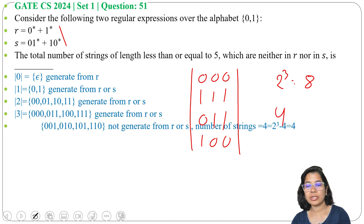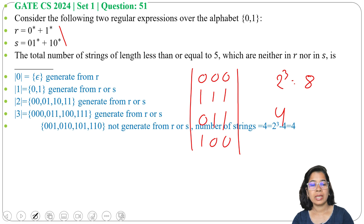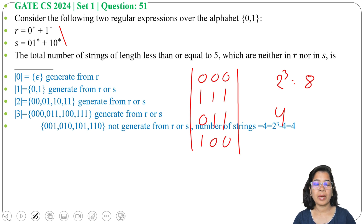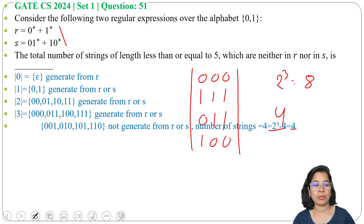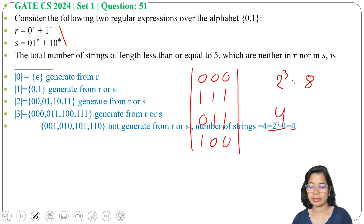The 4 strings of length 3 that cannot be generated from R and S are: 001, 010, 101, and 110. So 2 power 3 minus 4 equals 4. Thus 4 strings of length 3 cannot be generated from R and S.